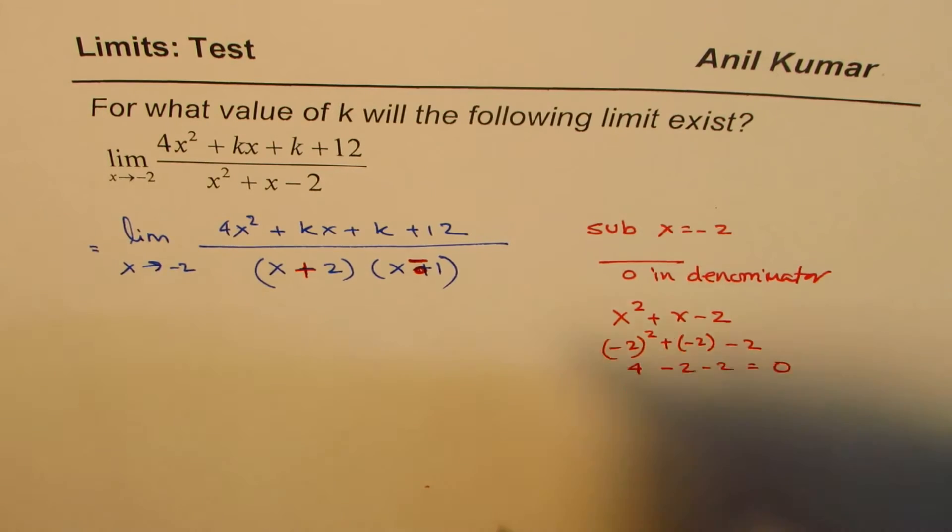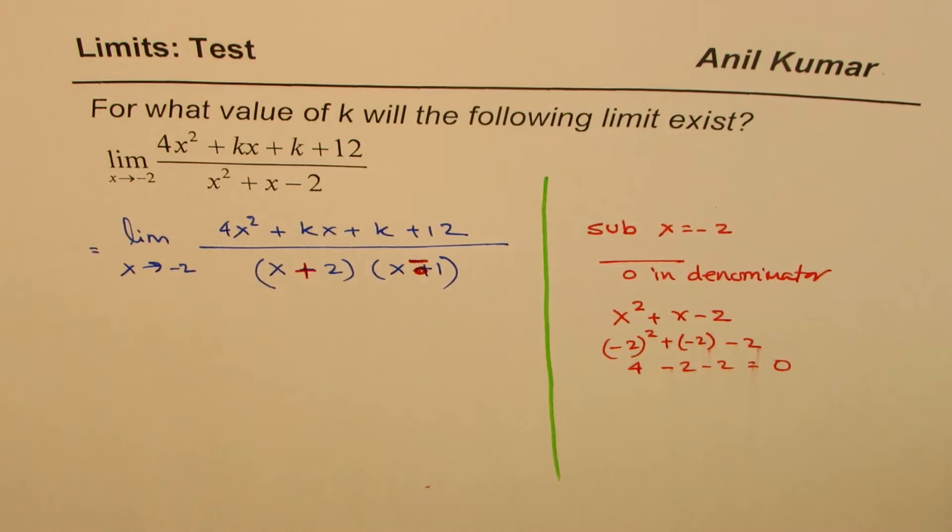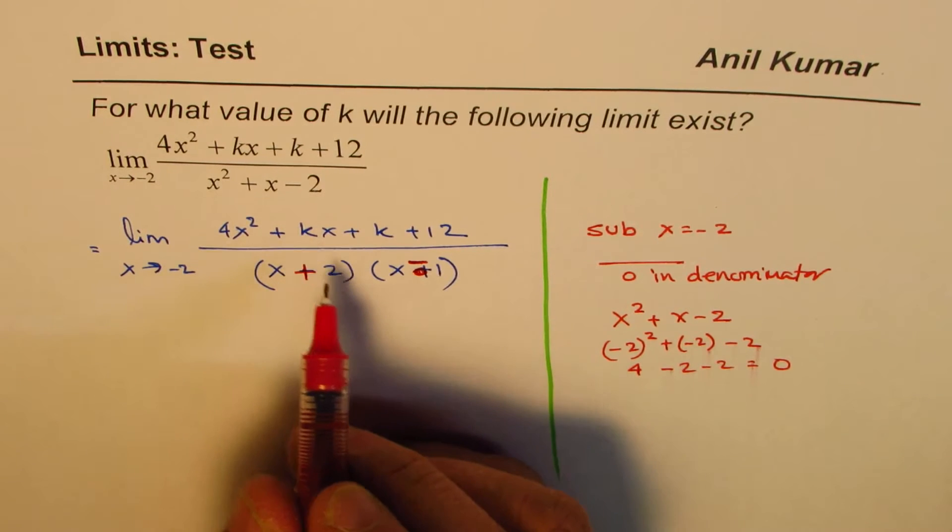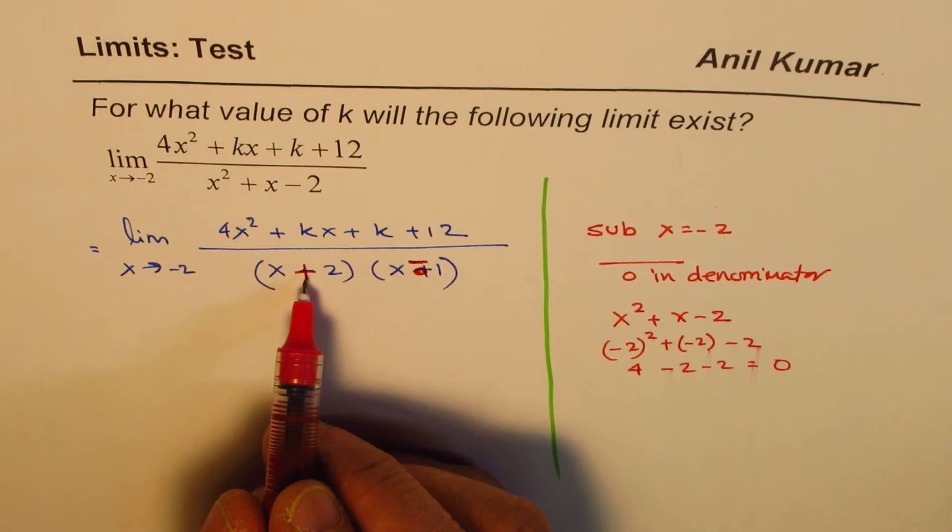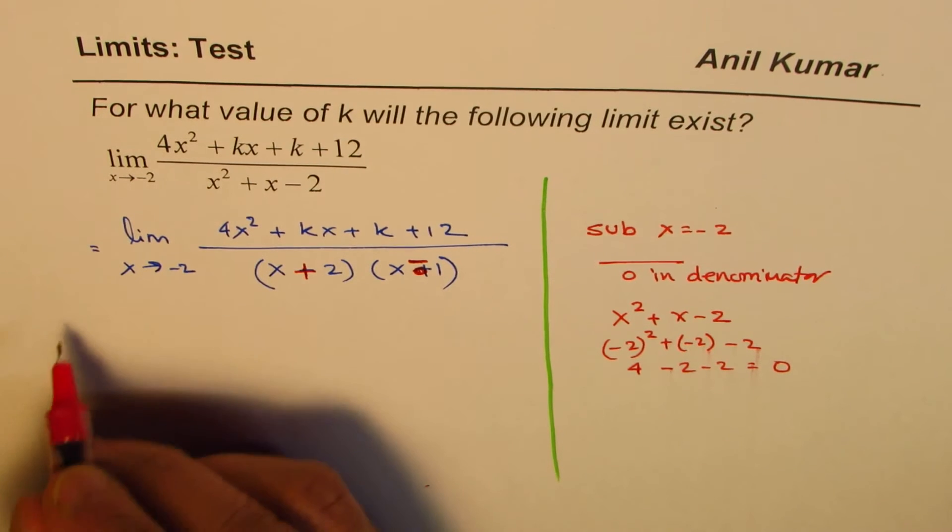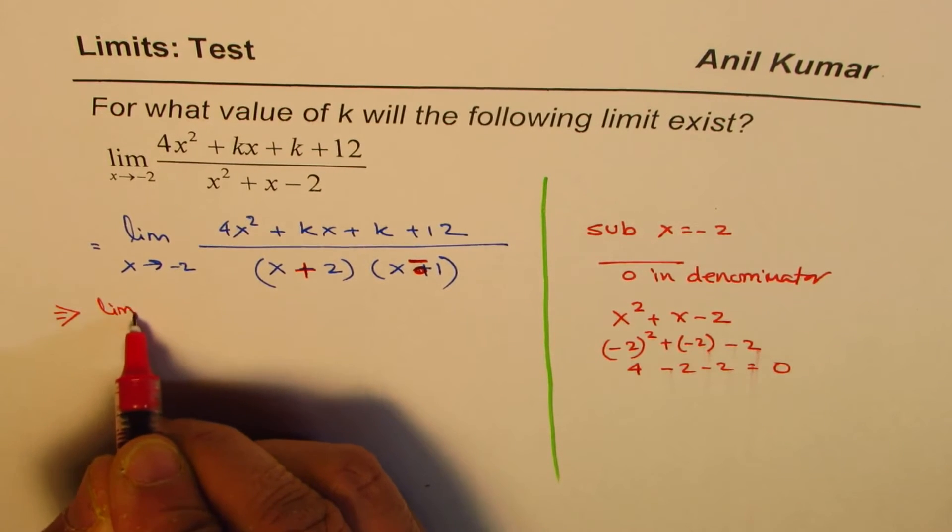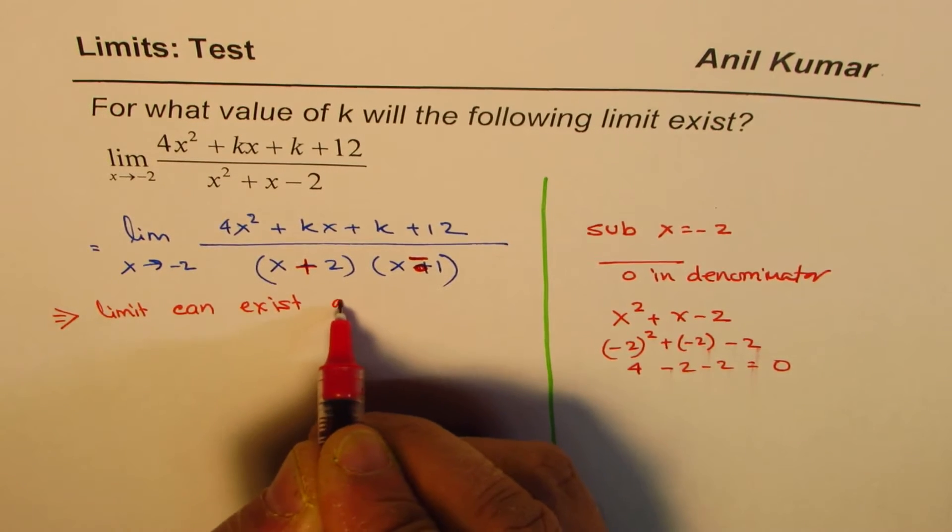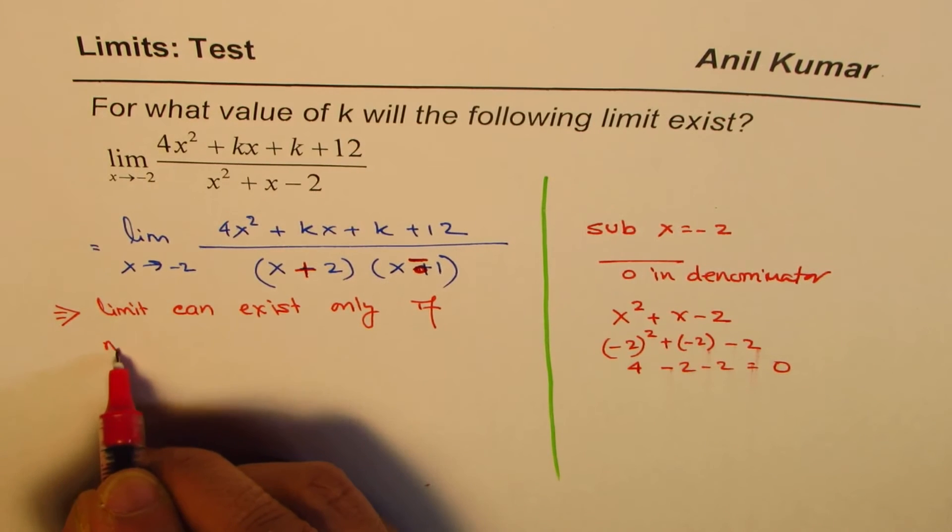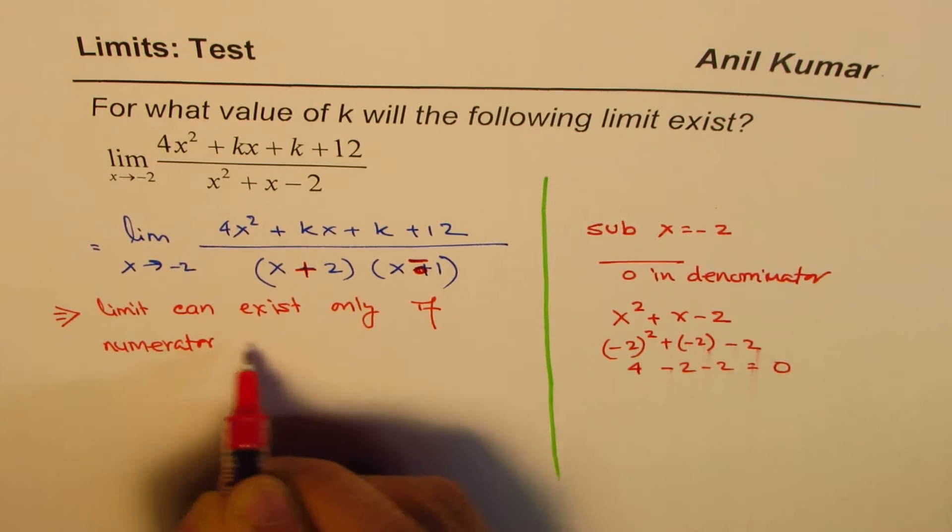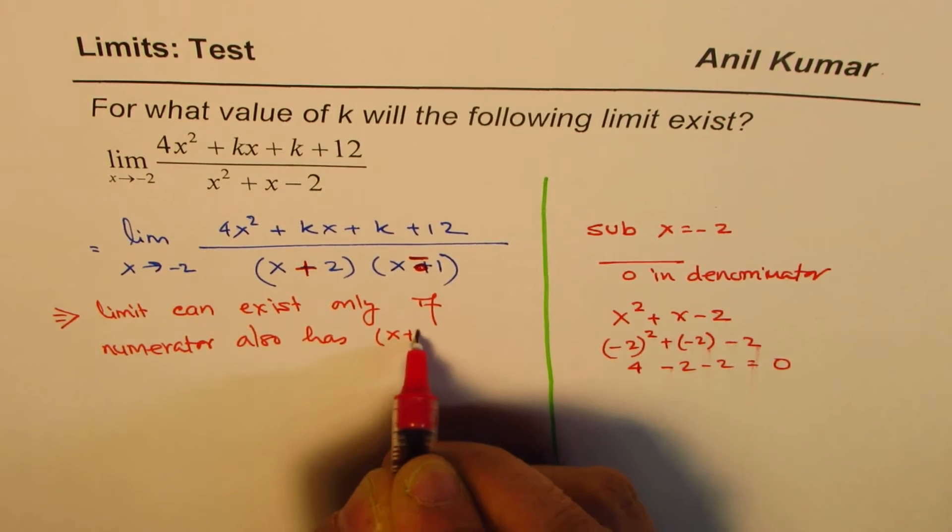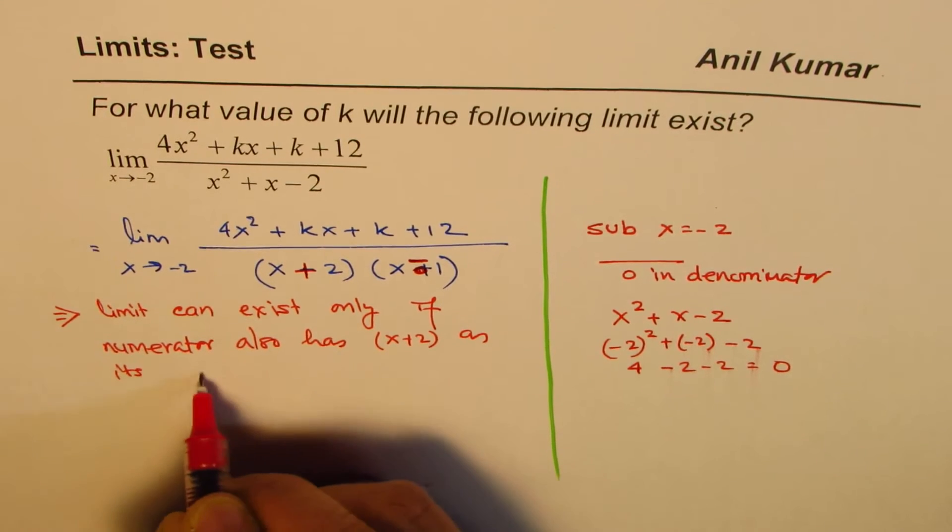What does that tell you? That is the thinking which goes when you solve such questions. It really says that the limit of this function can exist only if we have x minus 2 as a factor of numerator also. So this implies that the limit can exist only if numerator also has x plus 2 as its factor.